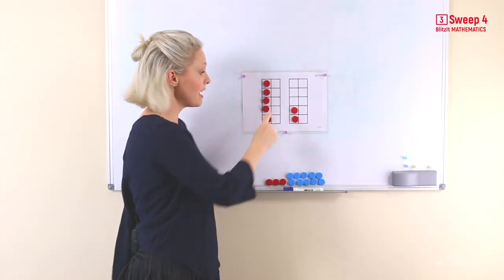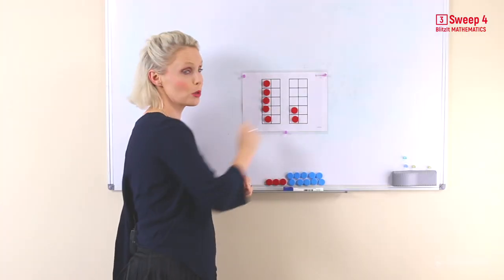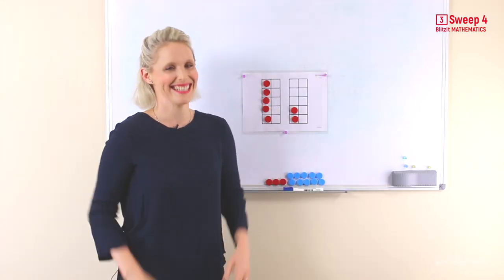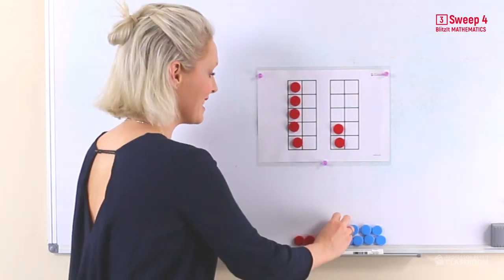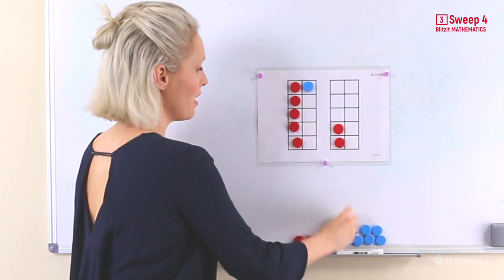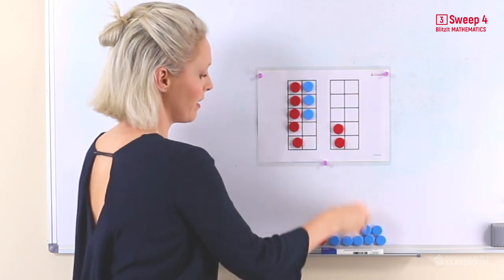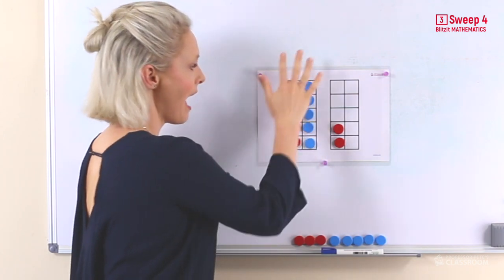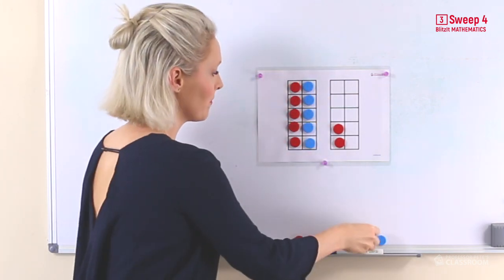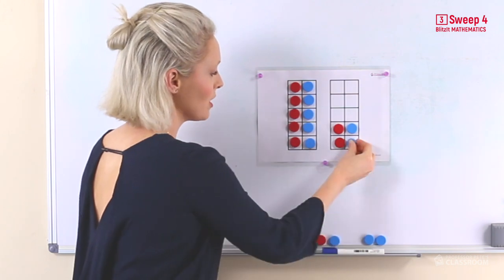Here you can see 5 and 2 equals 7. Now we need to add 7. So we know that it's 5, so we fill up our first 10 frame and we know that it adds 2.